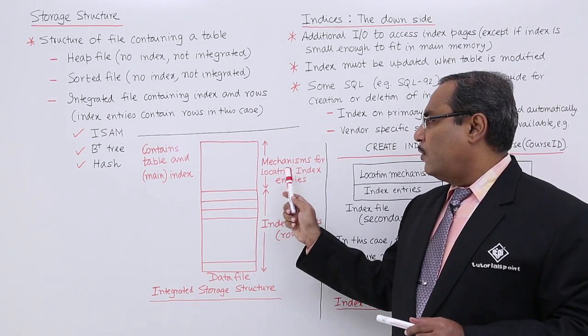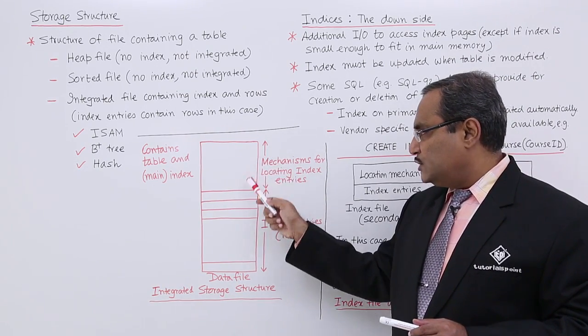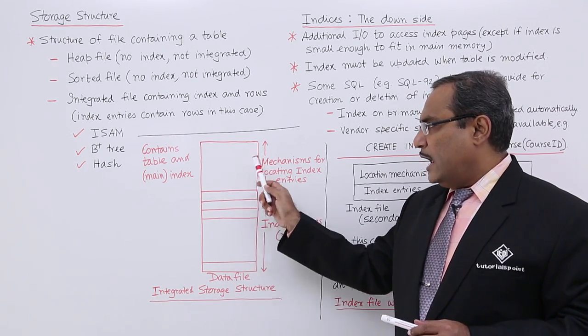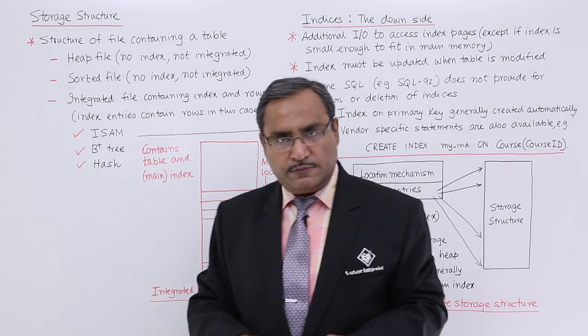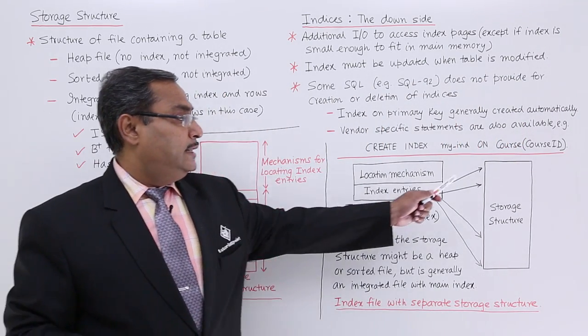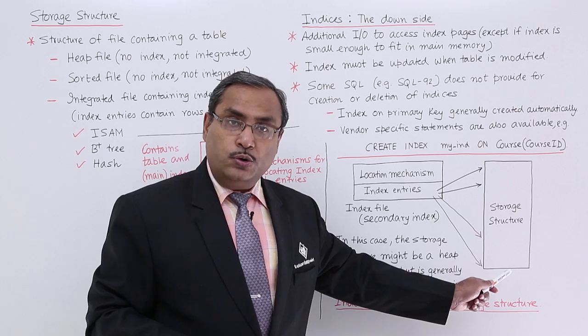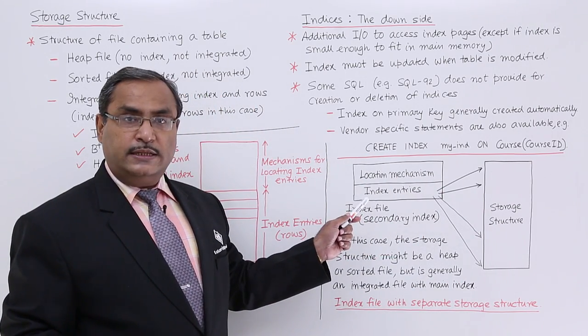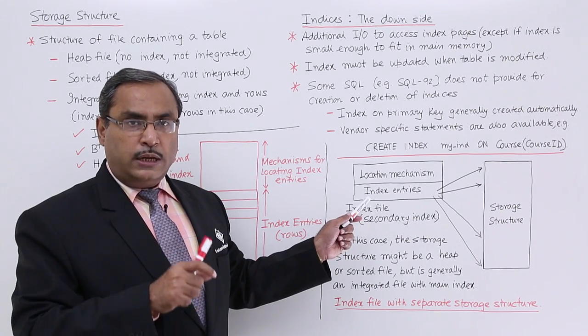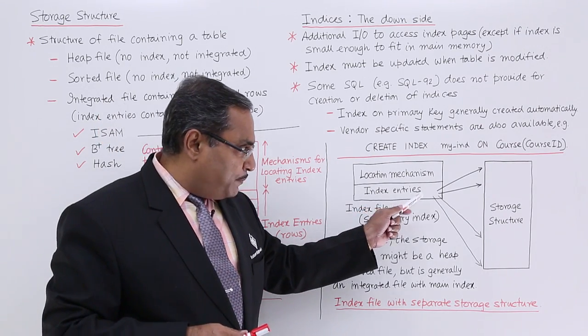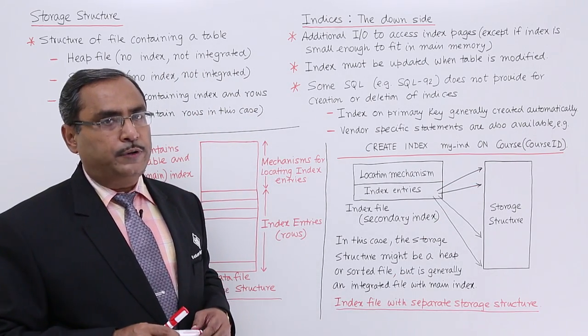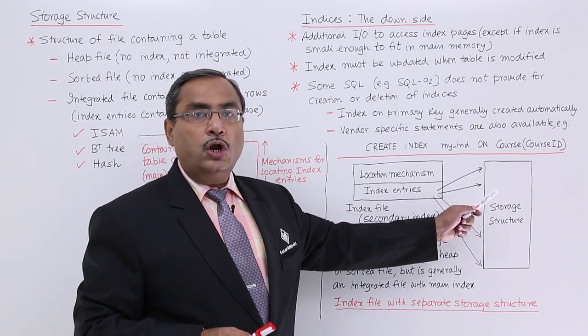Mechanism for locating index entries: this part, and these are the row index entries - the rows are there and you can access the other details for that. Otherwise, the storage structure is containing rows, and this is the location mechanism where index entries are there. Depending upon the respective index, I can point to the respective row, and from there other details will be obtained.